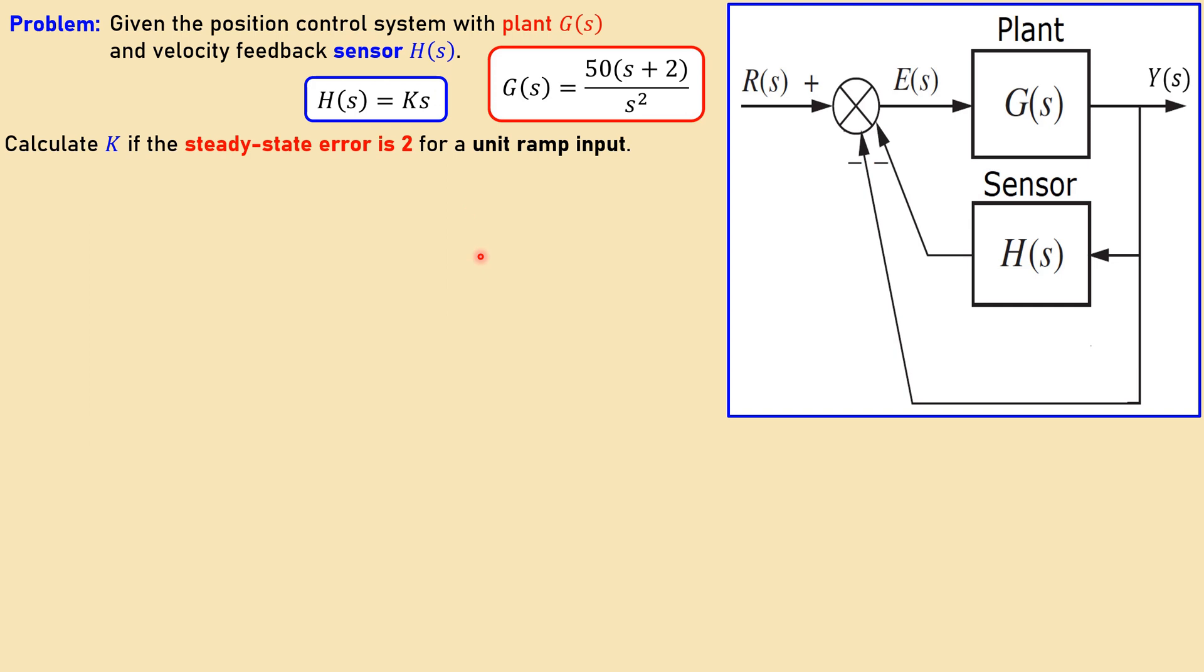It can be a position control using a servo motor or maybe a radar. In this case the plant transfer function is given here, this is the plant transfer function. And also the velocity feedback is given, and the transfer function of that is also given.